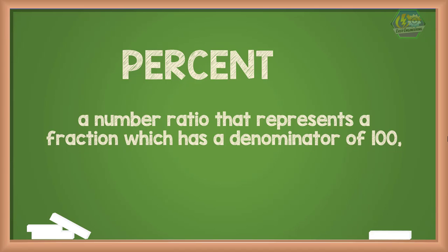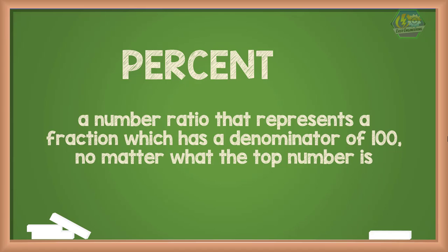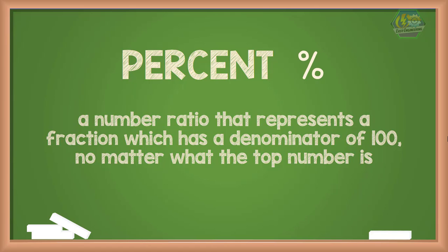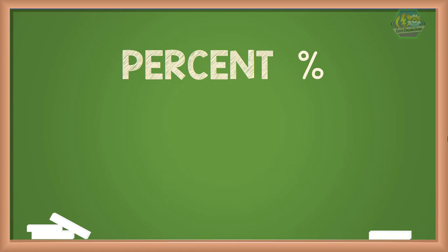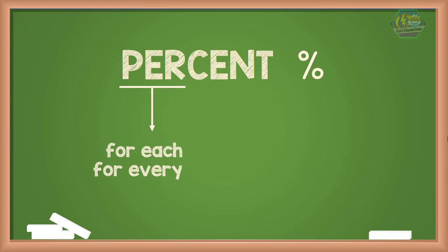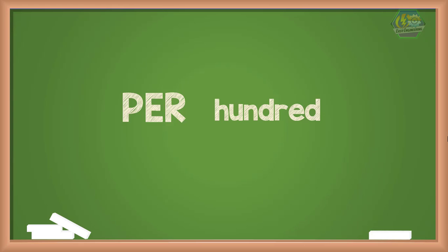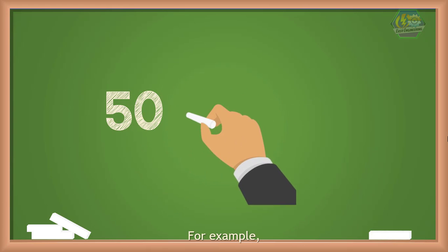In mathematics, a percentage — or percent for short — is a number ratio that represents a fraction that has a denominator of 100, no matter what the top number is. Since percent has a denominator of 100, we will not write it as a fraction but instead we will just use a percent sign. In fact, the word percent has a prefix 'per' meaning 'for each' or 'for every.'